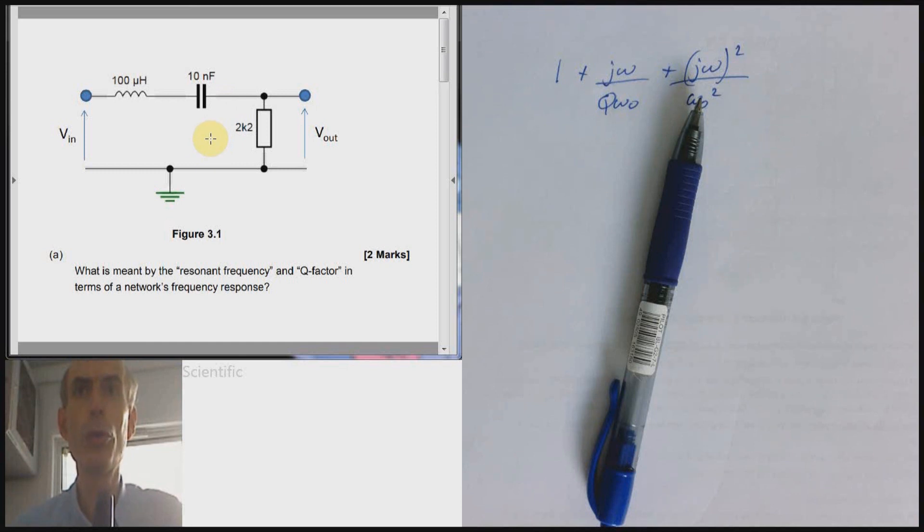You could also point out that this is a band pass filter. If you could remember that the configuration that we have here with the output being taken across the resistor is a band pass filter and point out that the resonant frequency is the frequency of maximum gain of this system. That would do.